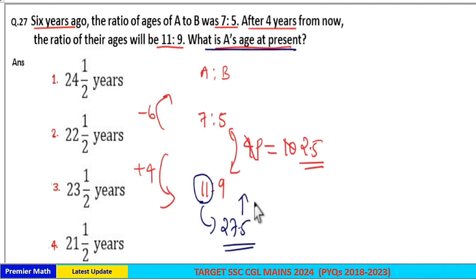Then, before 4 years, age is equal to 23.5. So option 3 is your answer.